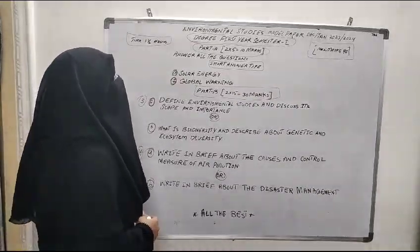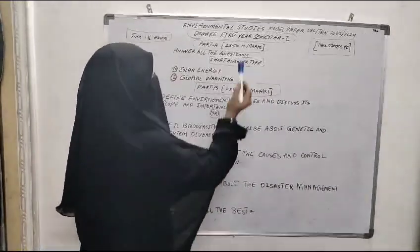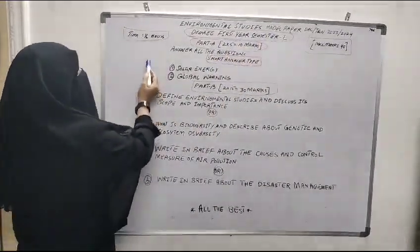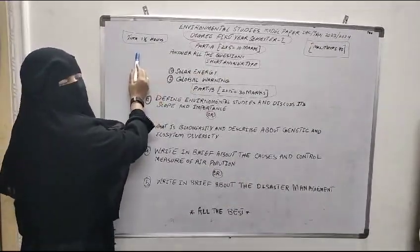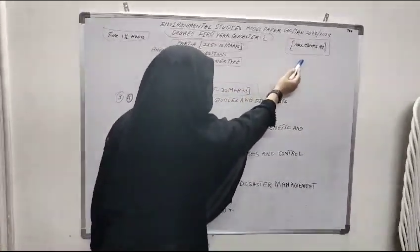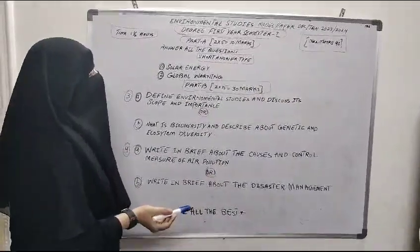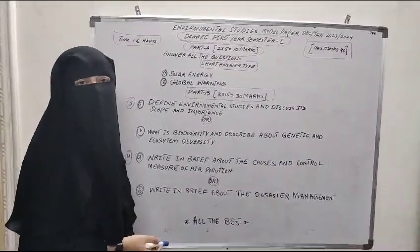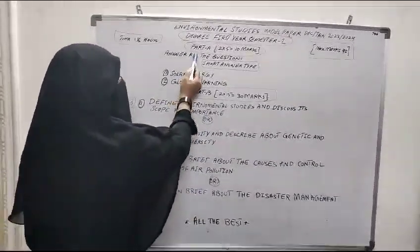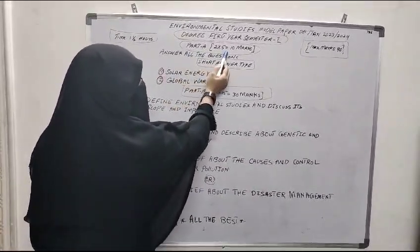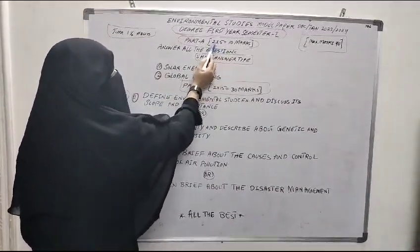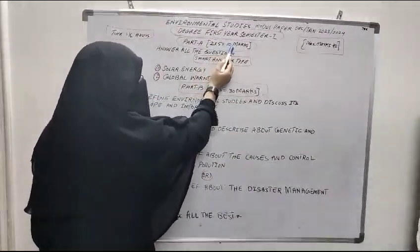So students, this is the paper environmental studies degree first year semester 1. The time duration of this paper is one and a half hours and the maximum marks is 40. Again, this paper is divided into two parts, that is part A and part B. Now in part A you have to write two questions and each question carries 5 marks. So two questions, 5 marks, you will get 10 marks.